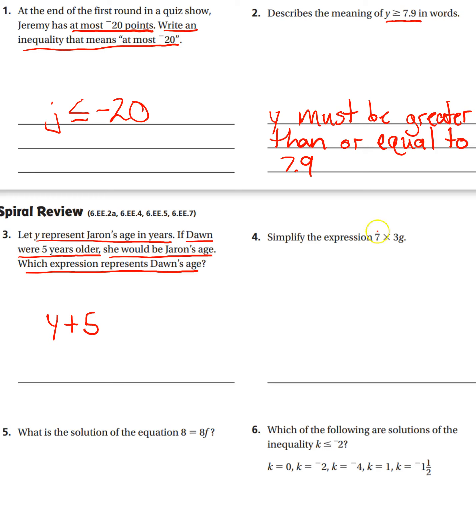Simplify the expression: you're just multiplying 7 times 3 and adding your G to the end of it. Number five, what is the solution for the equation 8 = 8F? This is multiplication, so we need to divide both sides by 8. That's going to leave you with just F on this side equals, and then you're going to have your answer here after you do 8 divided by 8.